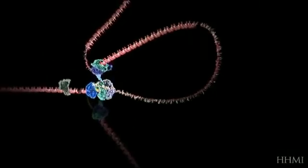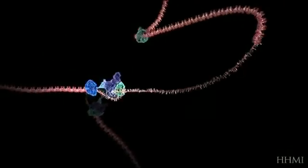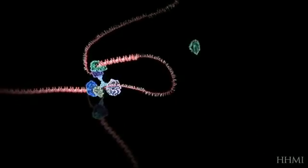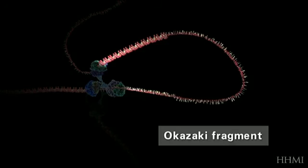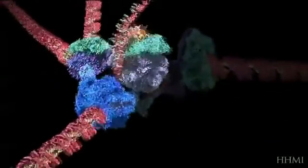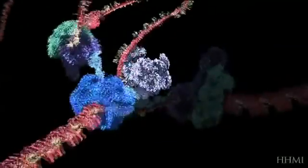As it emerges from the helix, the lagging strand is organized into sections called Okazaki fragments. These are then presented to a second DNA polymerase enzyme in the preferred 5' to 3' orientation.